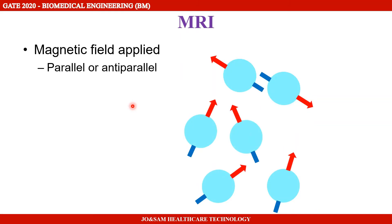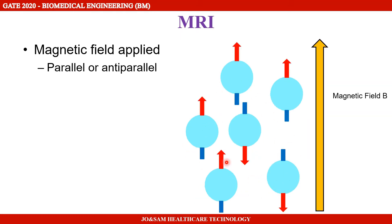In the MRI technique, a magnetic field is applied to our body. Normally, protons are randomly aligned, but once the magnetic field is applied, they align either parallel or antiparallel to the magnetic field.